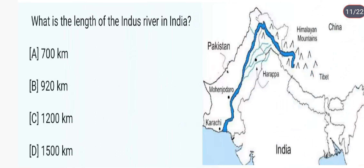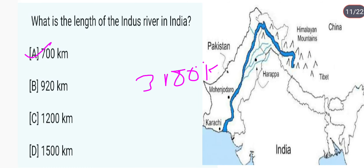What is the length of the Indus river in India? Indus river ki length in India hai 700 km. The answer is A. The length of the Indus river in India is about 700 km, aur iska total length 3,180 km hai, jismein Pakistan mein bhi aata hai.